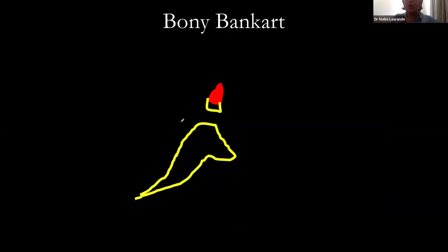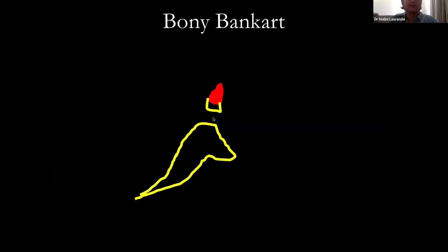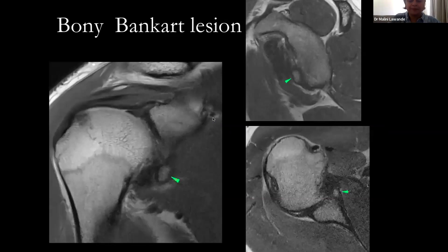With a bony Bankart, the dislocation involves more of an impaction — like kicking a door so hard that part of the wall also comes out. Along with the labrum, a piece of the glenoid bone itself is avulsed. This is the bony Bankart lesion.